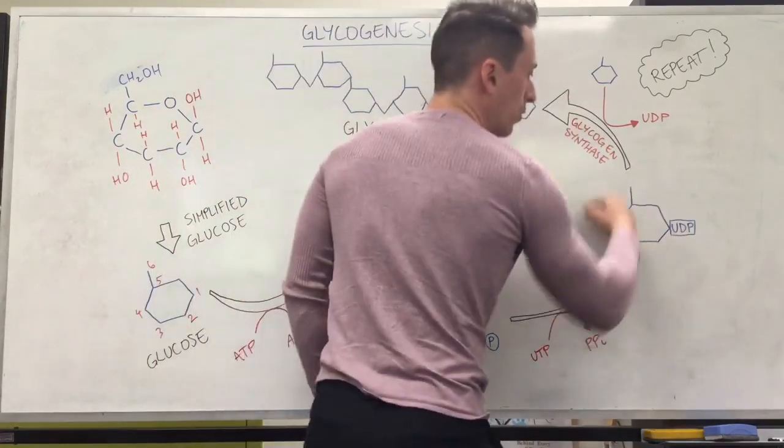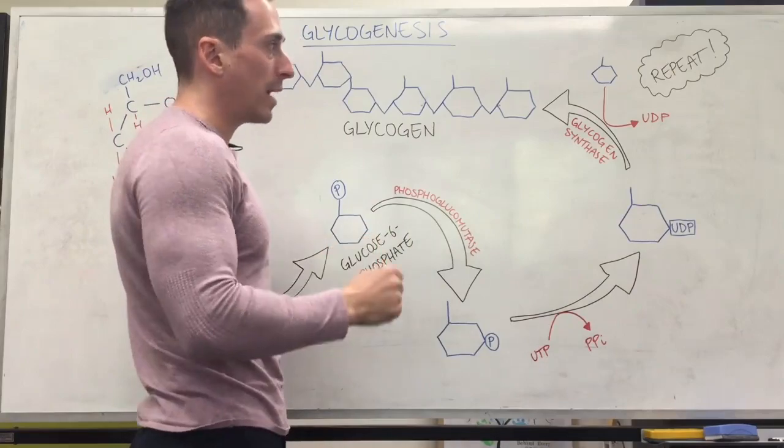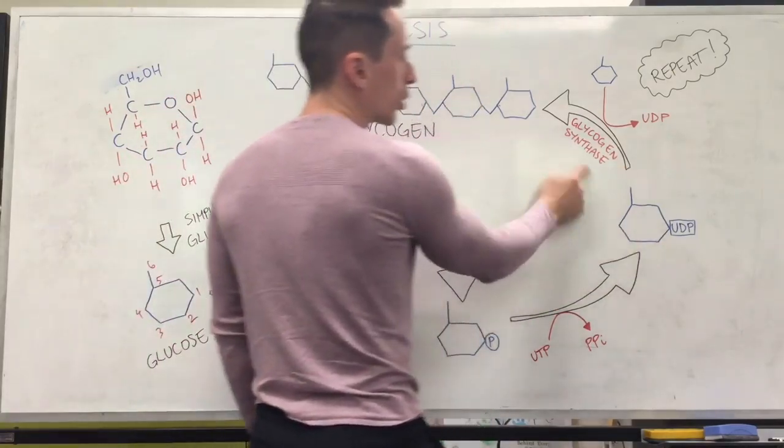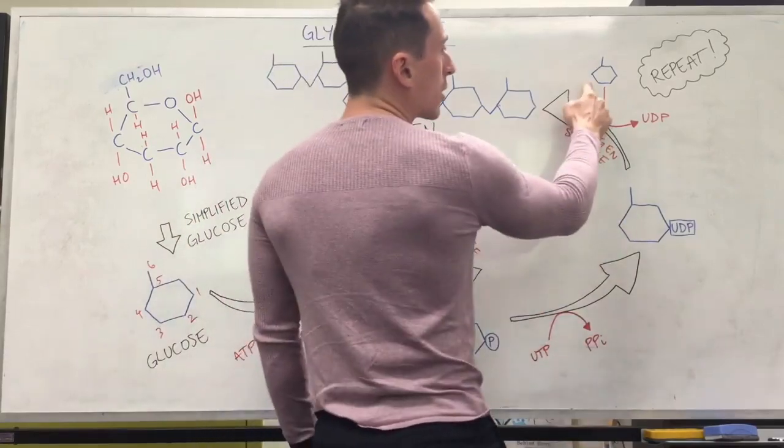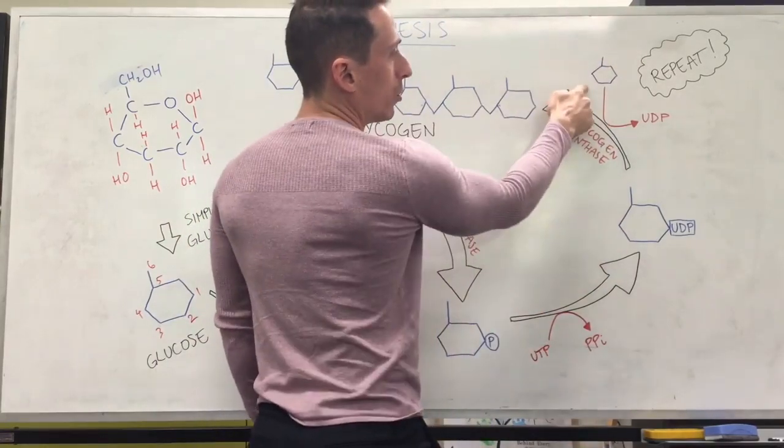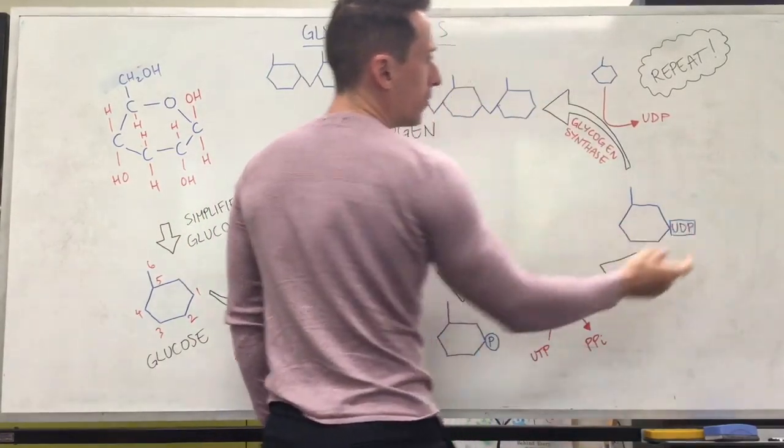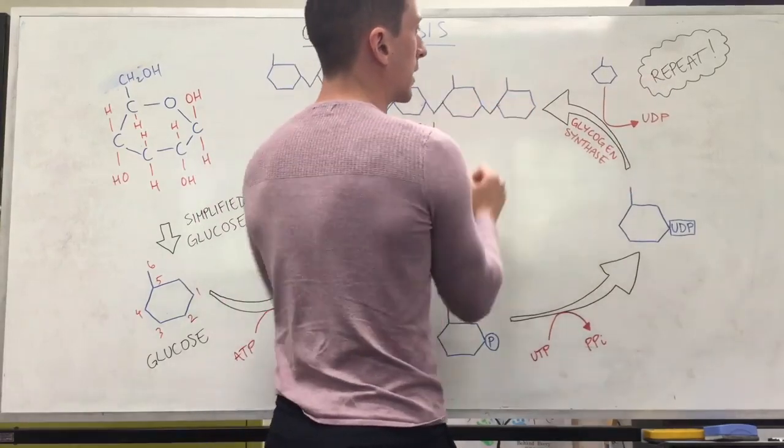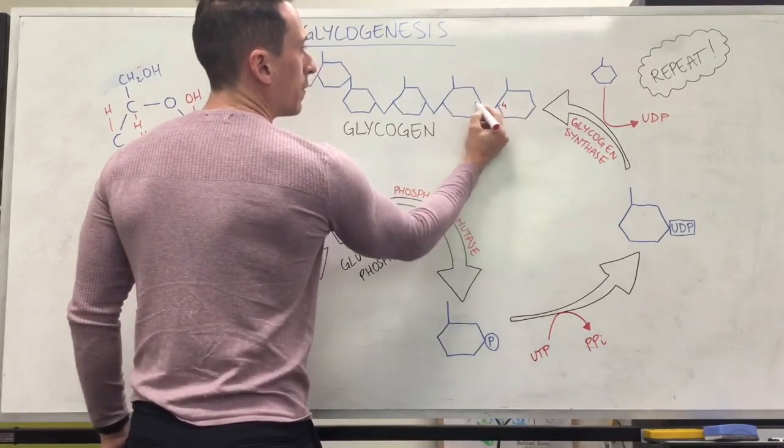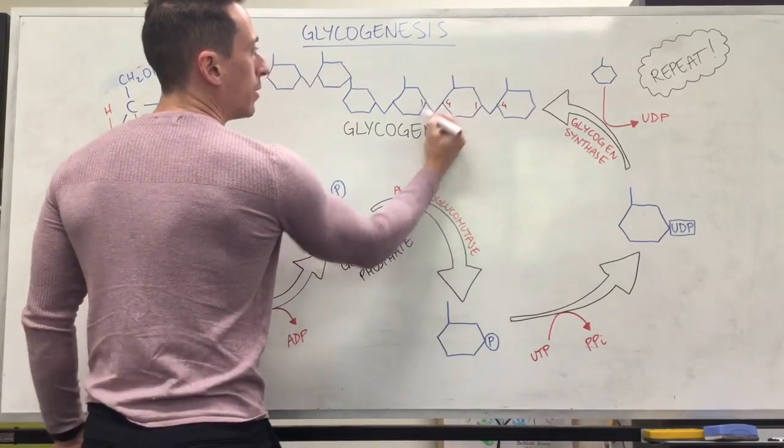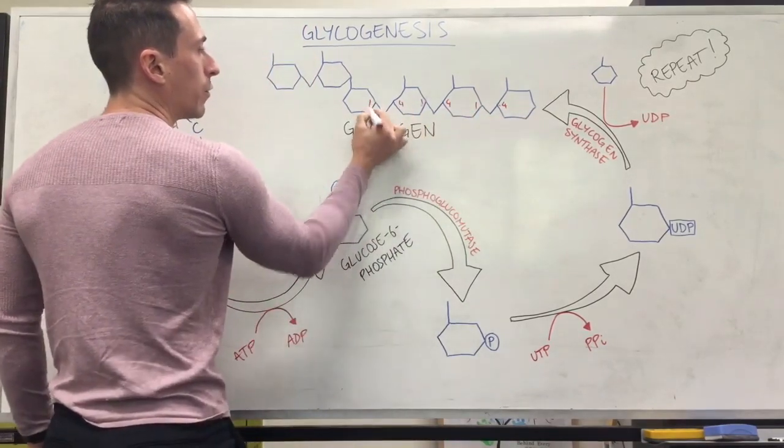We can now snap these together to create glycogen. And what we do is we take an enzyme called glycogen synthase. Makes sense. Snaps things together. We take a glucose molecule and we pull off the UDP and it facilitates the linking together at which carbons? At the fourth carbon and the first carbon. Fourth carbon, first carbon, fourth carbon, first carbon.